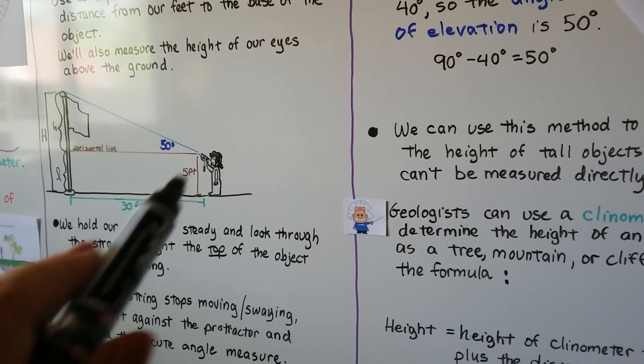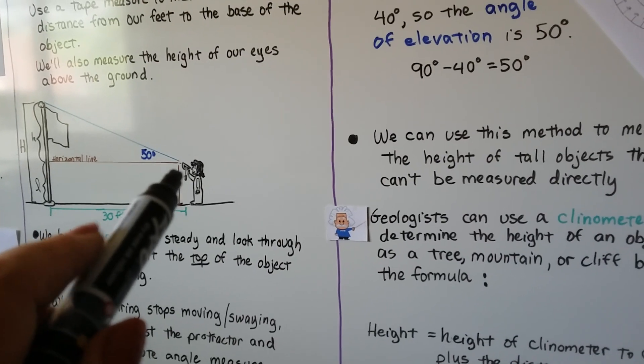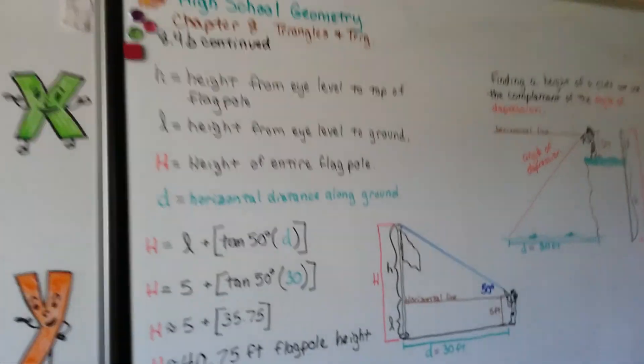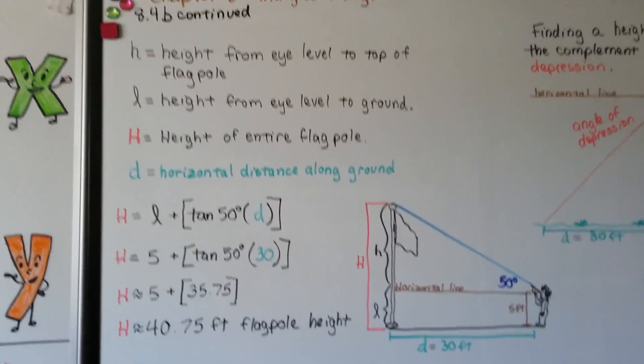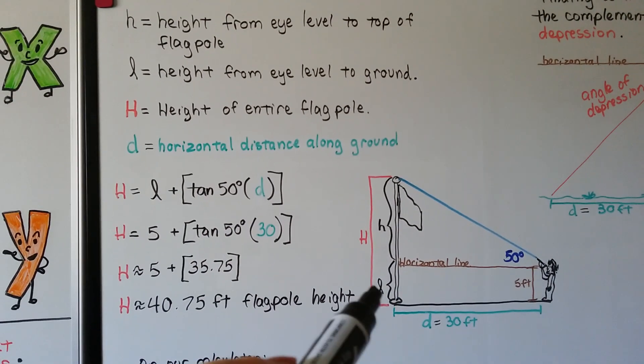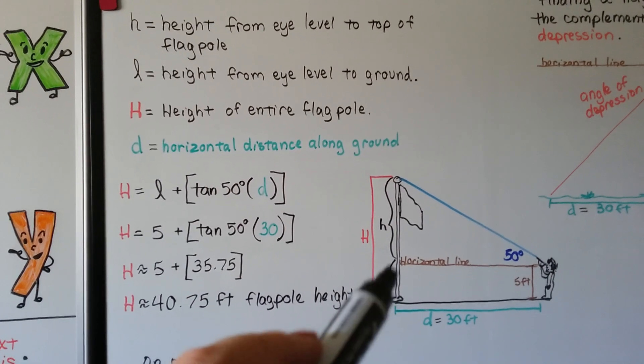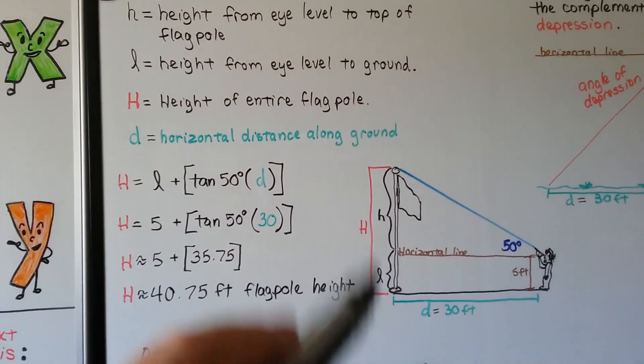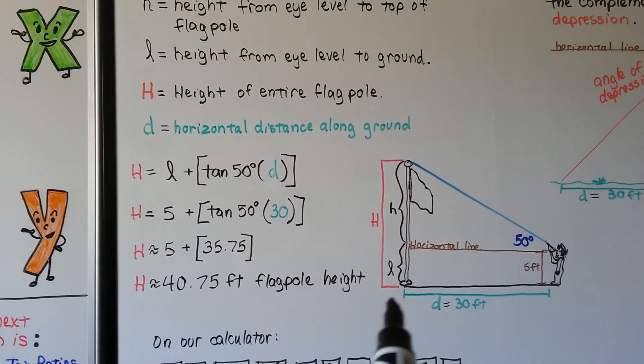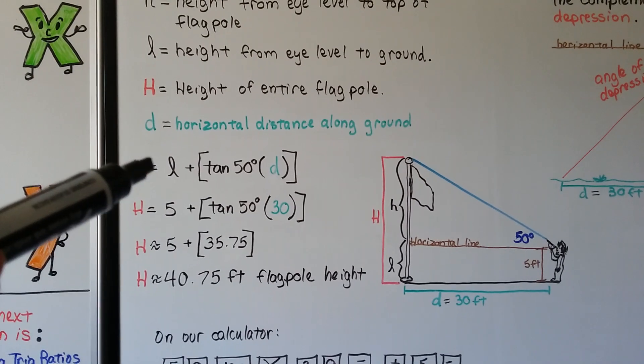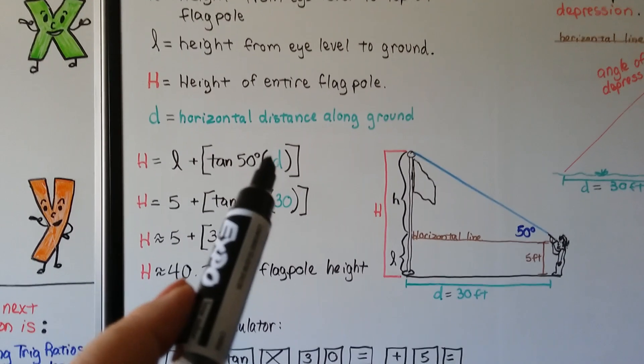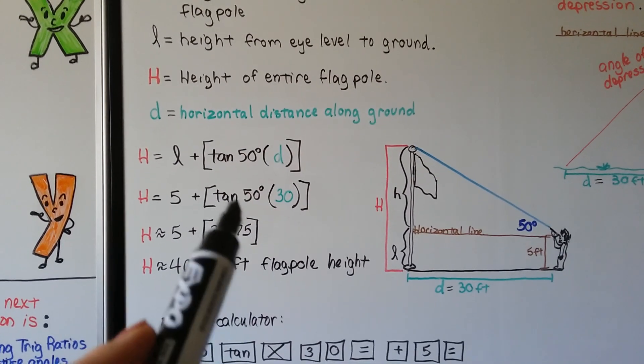So using this information, we're going to pretend like the string is at 40 degrees on her protractor. So this lowercase h is going to be the height from eye level to the top of the flagpole. The script L is going to be the height from eye level to ground. Our red capital H is going to be the entire flagpole. And D is going to be our horizontal distance along the ground. So the height of the entire flagpole is equal to that eye level height plus the tangent of 50 degrees times that distance. So that's going to be times 30.